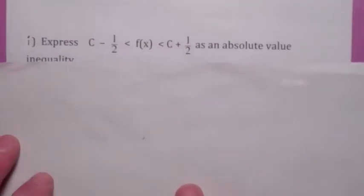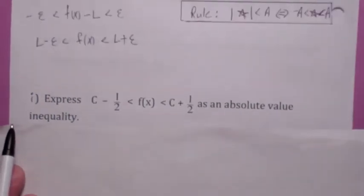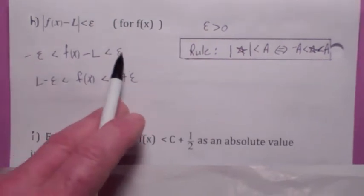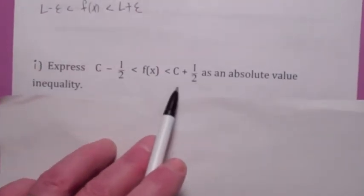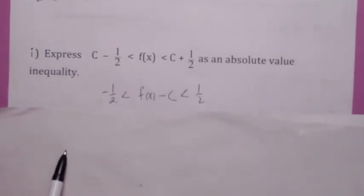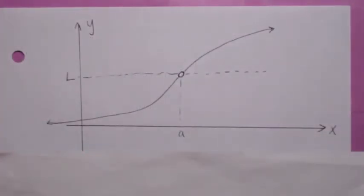Let's go backwards again. Suppose we have this double inequality and you want to write it as an absolute value inequality. Remember the trick: you have to have the same number on both sides, one of them being negative, one of them being positive. So subtract c from all three things, and then it would be written as an absolute value inequality. I think we're ready for the precise definition of limits.